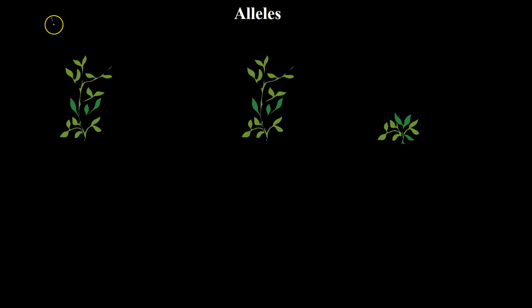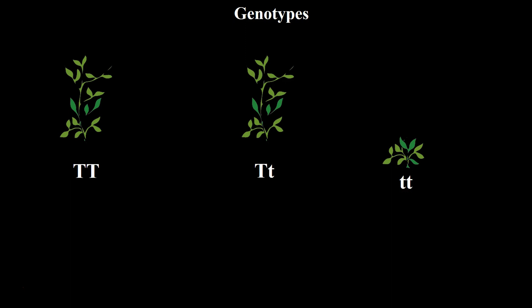So, alleles: if I took a purebred tall plant, its alleles are going to be a dominant T and a dominant T — two dominant alleles. What about a hybrid, meaning it has one of each? It's going to have a dominant allele and a recessive allele. What about a purebred for being short? It's going to have two recessive alleles. Each letter represents one allele. The genotype refers to both alleles together.